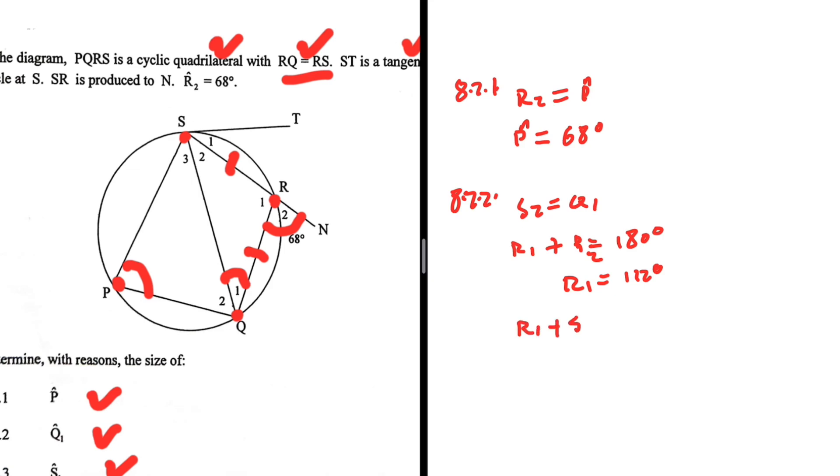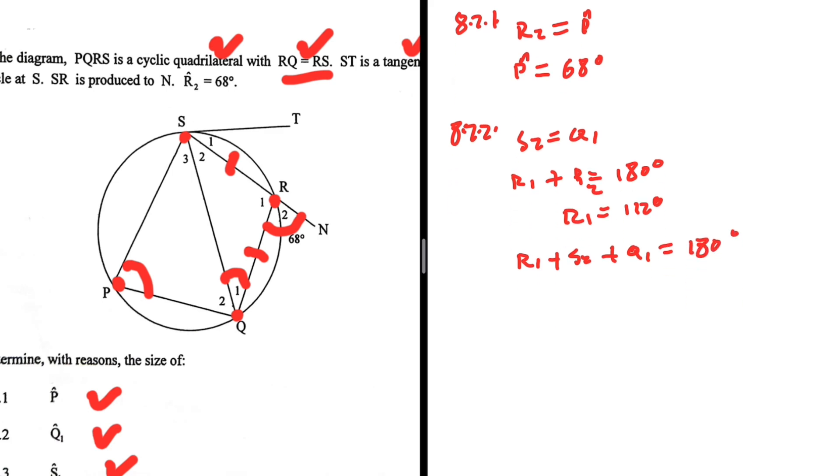R1 plus SQ plus Q1 equals 180 degrees. That's the sum of angles in a triangle. So R1 plus Q1, because SQ equals Q1, will be 180 degrees. So 2Q1 will be 68 degrees. So Q1 equals 34 degrees. That is the second question.